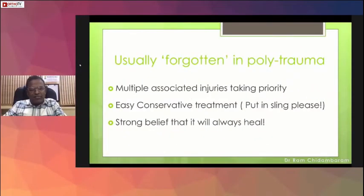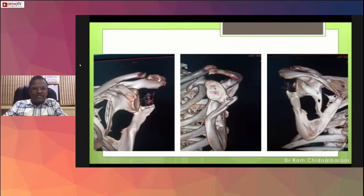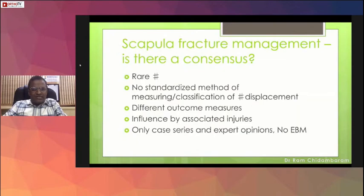The scapula is an important bone, usually forgotten in polytrauma because of the multiple associated injuries taking priority. There is a strong belief that it will always heal and is placed in a sling, but that is not the case. Some cases lead to symptomatic malunion. So why is there no consensus in scapular fracture management?